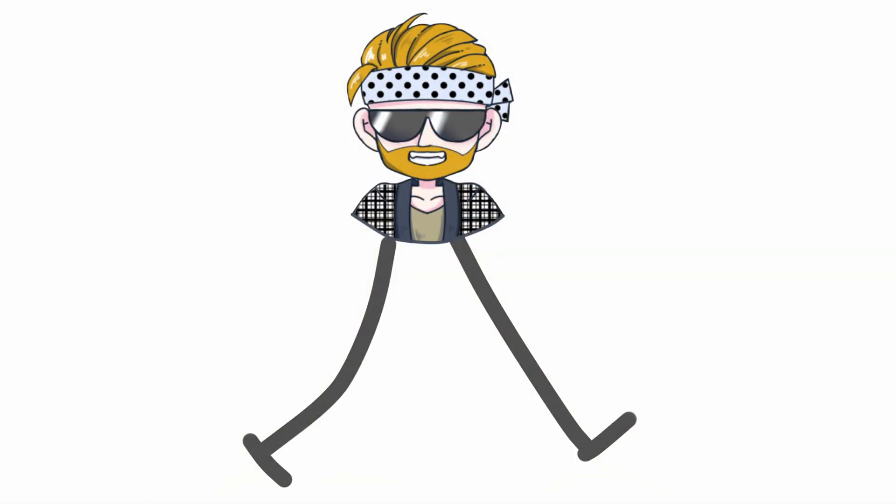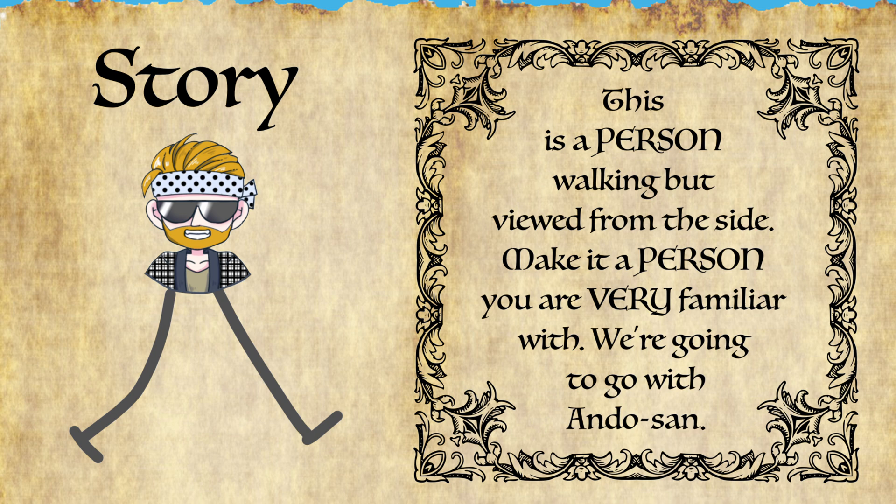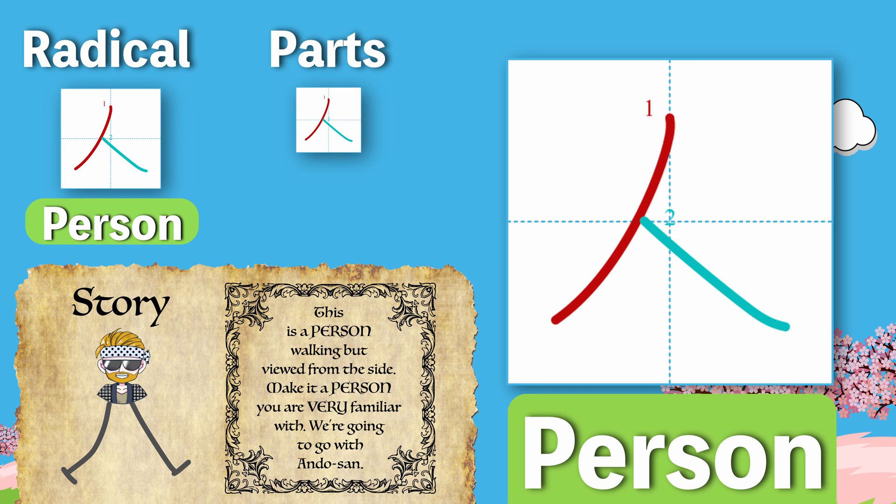This is still something you frequently see in older people here in Japan, where they're bent nearly in half permanently from so much time spent working in the fields. Our story for person is more of a pictograph. This is a person walking but viewed from the side. Make it a person you're very familiar with. We're gonna go with Ando-san. We'll be using Ando-san because he'll be easy for me to use in future stories. But when I first learned kanji, I used someone else important to me, which worked well. If you do decide to choose your own person, make sure it's someone you'll easily remember and who you can make lots of stories about. Also, remember that it's a good idea to pause the video after each story and really try to imagine it, or to create a story of your own that will help you remember the kanji even better. Make sure the story contains the meaning and every single part in some way.